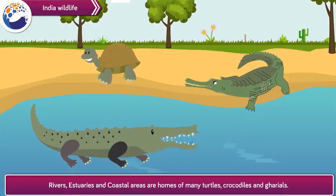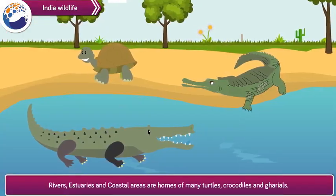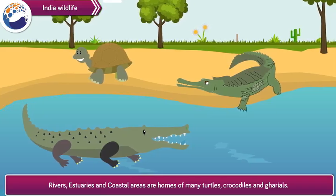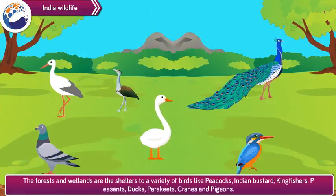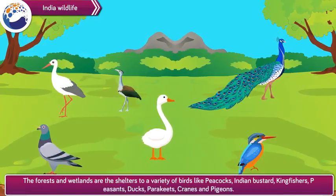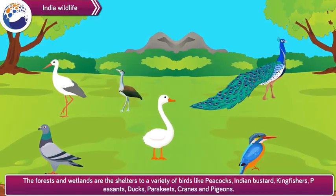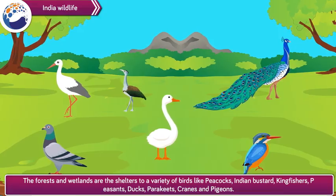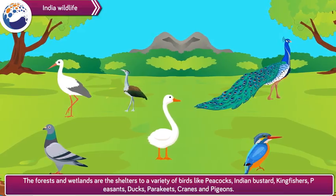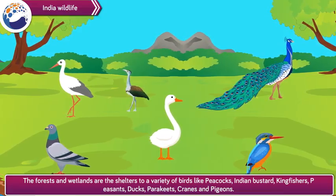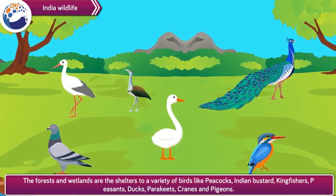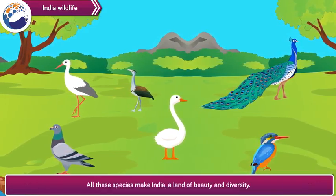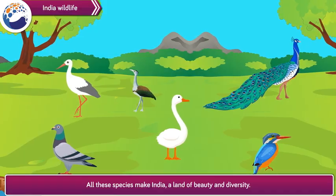Rivers, estuaries and coastal areas are homes of many turtles, crocodiles and gharials. The forests and wetlands are shelter to a variety of birds like peacocks, Indian bustard, kingfishers, pheasants, ducks, parakeets, cranes and pigeons. All these species make it a land of beauty and diversity.